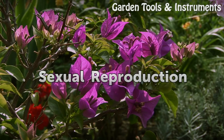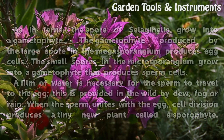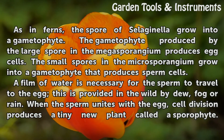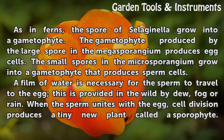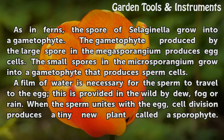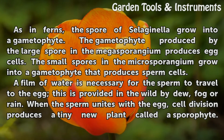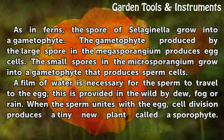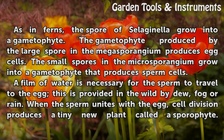Sexual Reproduction. As in ferns, the spores of Selaginella grow into a gametophyte. The gametophyte produced by the large spore in the megasporangium produces egg cells. The small spores in the microsporangium grow into a gametophyte that produces sperm cells. A film of water is necessary for the sperm to travel to the egg, provided in the wild by dew, fog, or rain.